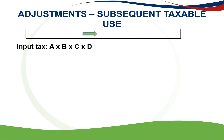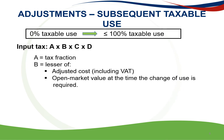In the case of goods or services acquired wholly for the purposes of making non-taxable supplies that are subsequently applied for making taxable supplies, an adjustment must be made to input tax. This input tax is calculated by applying the formula A times B times C times D, where A is the tax fraction. B is the lesser of the adjusted cost including VAT, or the open market value of the goods or services at the time the change of use adjustment is required.